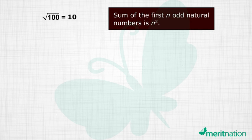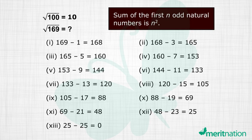Similarly, you can go ahead and do it for 169. You start the process and it will take you 13 steps to reach a 0. So the square root will be 13.